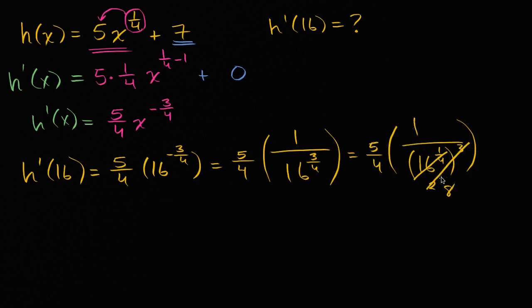So you have 5/4 times 1/8, which equals 5 times 1 is 5, and 4 times 8 is 32. So we get 5/32, and we are done.